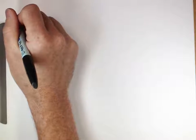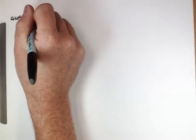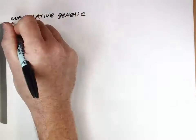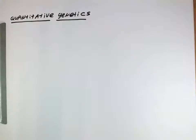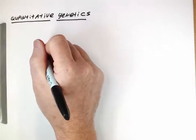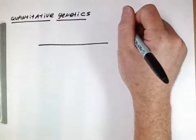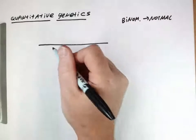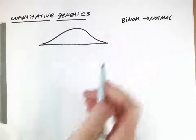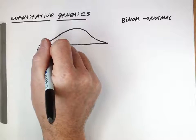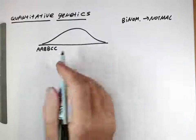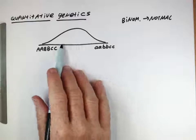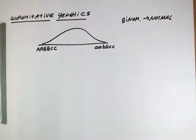Now we'll be looking at what's called quantitative genetics. Quantitative genetics is studying genetics but by using distributions. We're going from the binomial distribution to a normal distribution. We have a normal distribution of the trait, where values at the low end are caused by certain genotypes, values at the high end are caused by other genotypes, and different combinations of alleles produce more individuals in the middle.